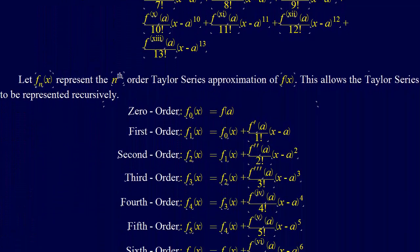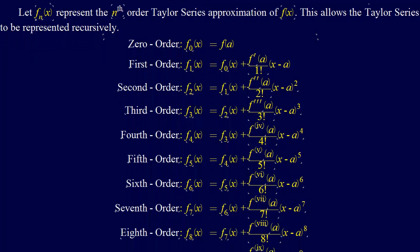But then there's one other thing I wanted to show you, which should be obvious but is kind of nice to know, that we can write these out recursively. We have the zeroth order approximation, f of a. Then the first order approximation is just equal to f sub 0 of x, the zeroth order approximation, plus one more polynomial term.